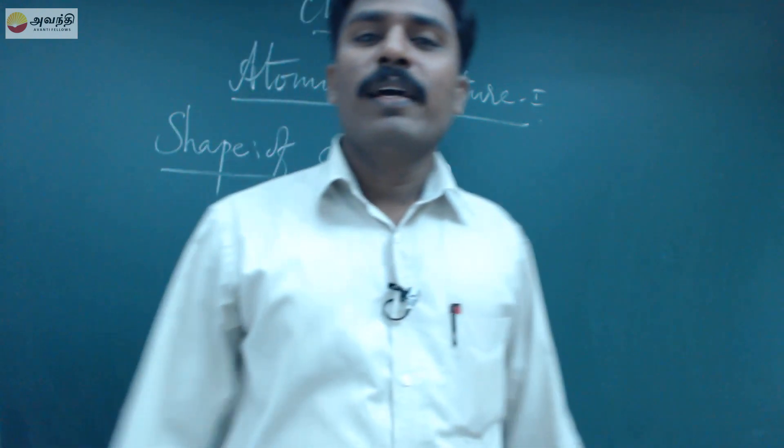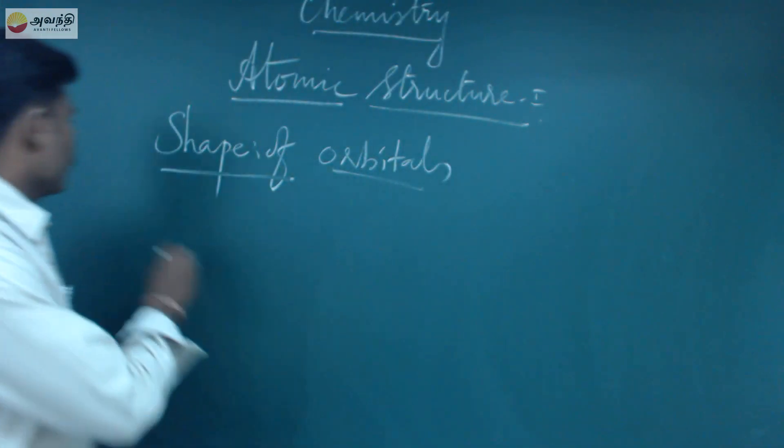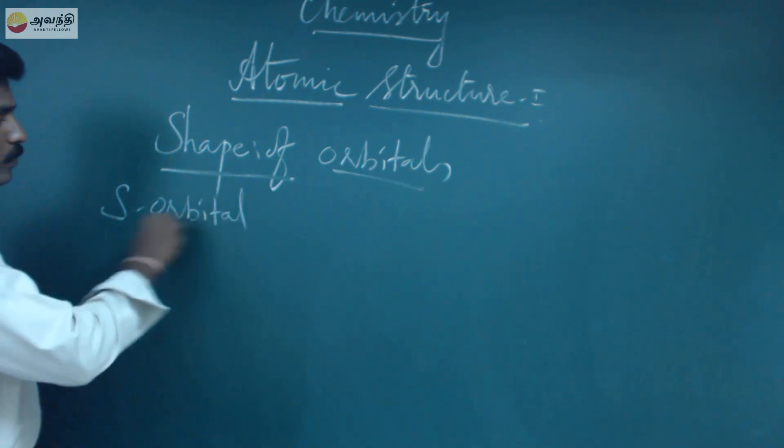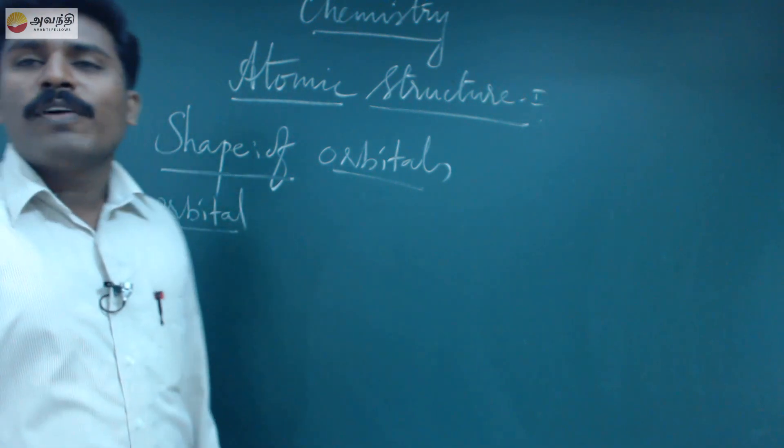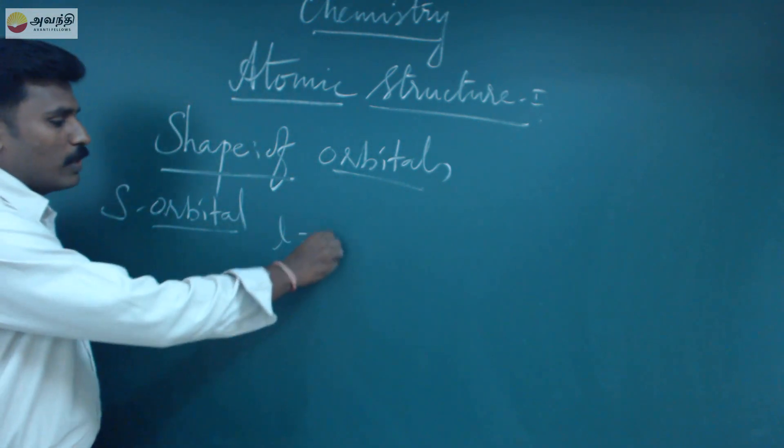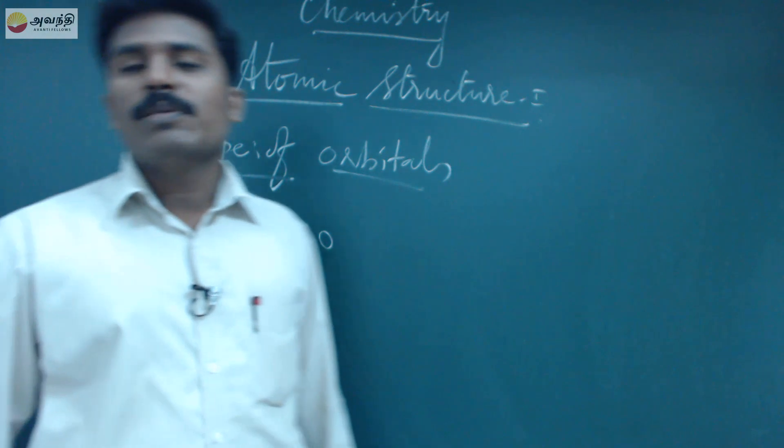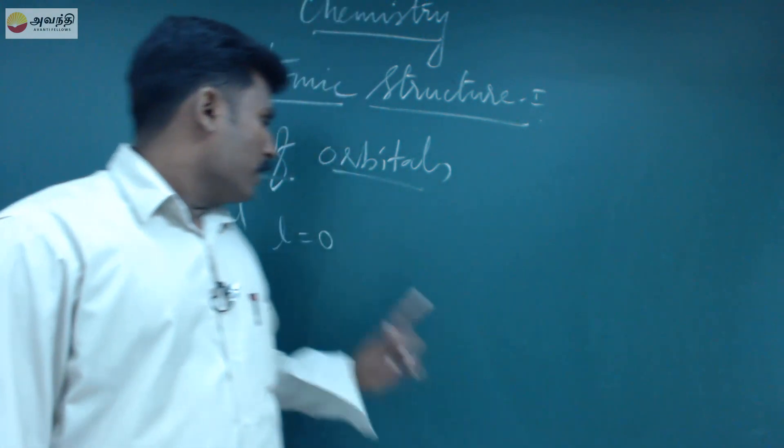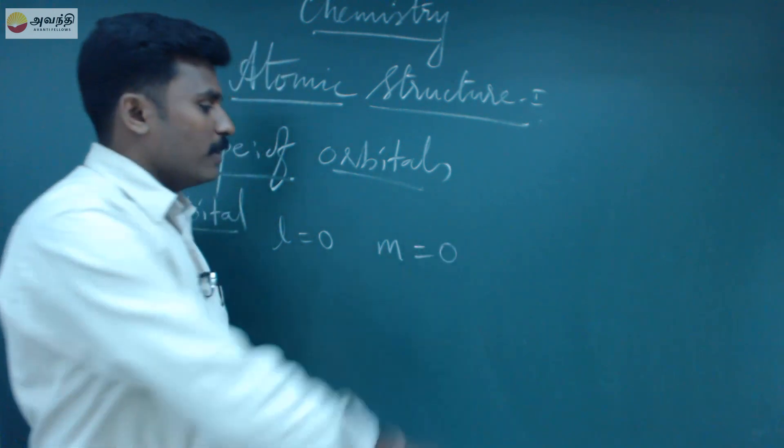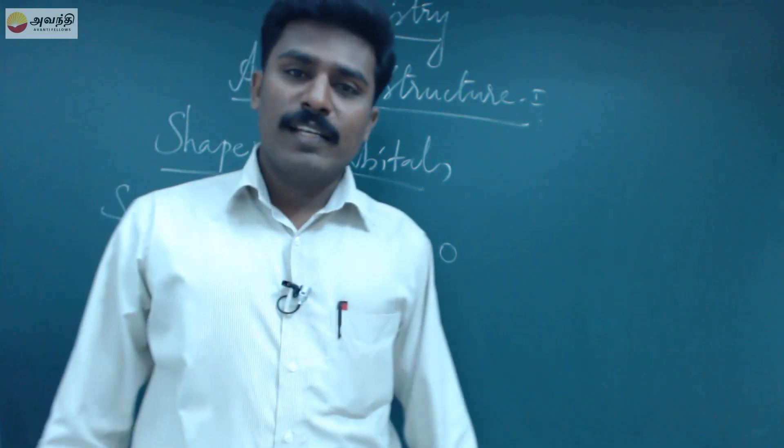The first thing we are going to discuss is the s orbital. For s orbital, the l value is equal to zero, where l value means azimuthal quantum number. When l value is zero, the magnetic quantum number is also zero, which means there is no orientation that takes place.